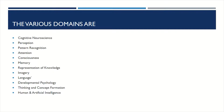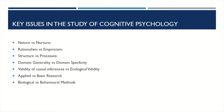Let us now look at the key issues in the study of cognitive psychology. The first is nature versus nurture — we may emphasize innate characteristics of human cognition (nature) or the environment (nurture). The second is rationalism versus empiricism — the truth about ourselves and the world may be approached through applying reason and logic, or by observing and testing our observations.